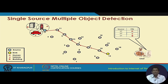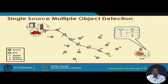The previous example was a single source detecting a single object. Now let us consider a single source detecting multiple objects. Earlier there was only a human object; now we have three — a human, a vehicle, and a building. It becomes very difficult for a single node to recognize what the different objects are, and object recognition becomes important. Node seventeen must decide whether it sees one object or three different objects.